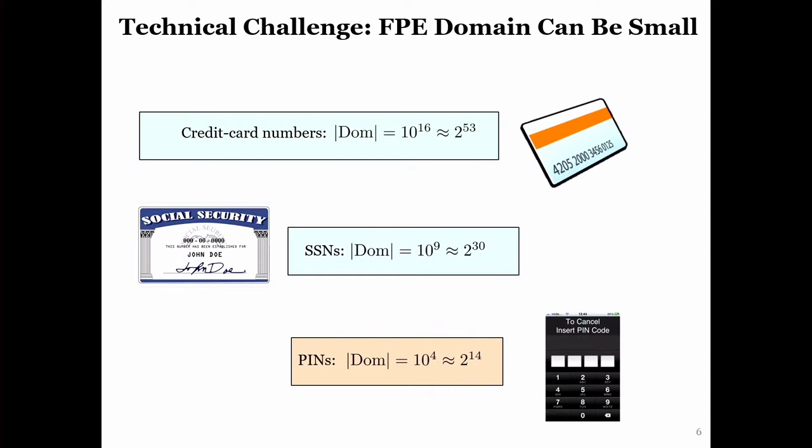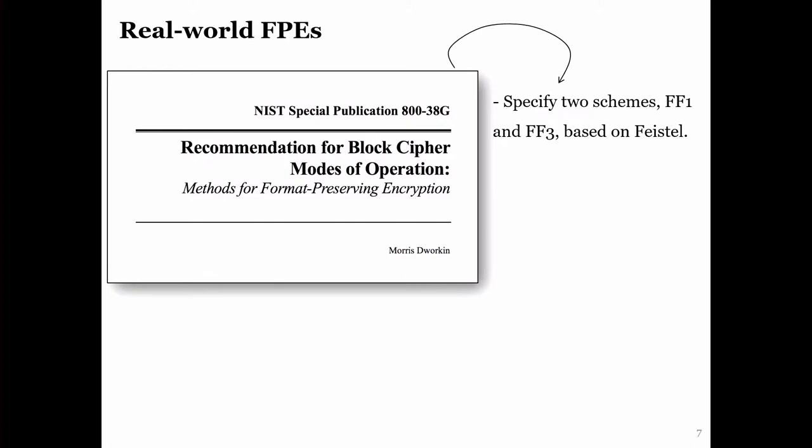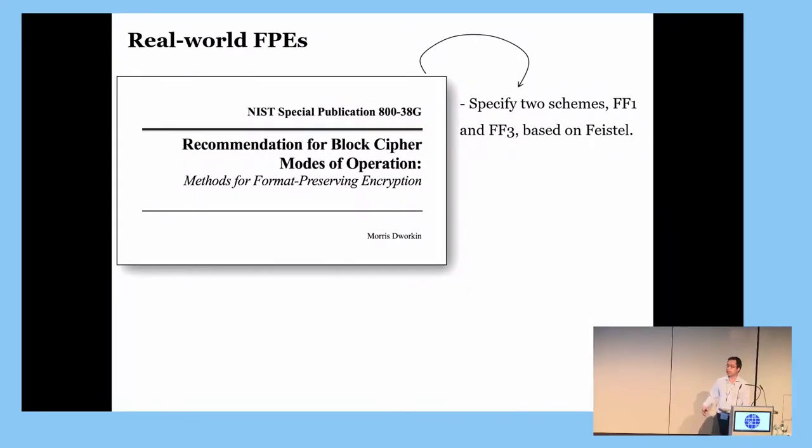So, the annoying obstacle in designing FPE is that unlike conventional block ciphers such as AES, here the domain can be quite small. For example, if you encrypt social security numbers, the domain size is just about 2 to the 30. As I mentioned earlier, FPE is widely used in practice and the two most important schemes are NIST standards, FF1 and FF3. Both are based on Feistel networks.